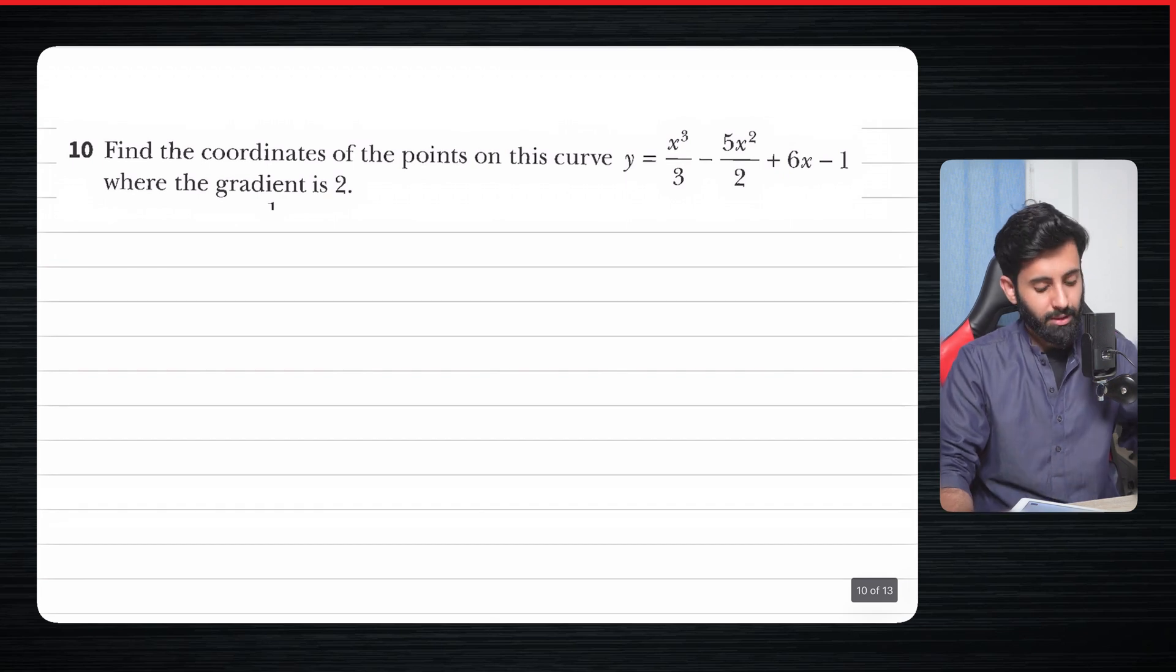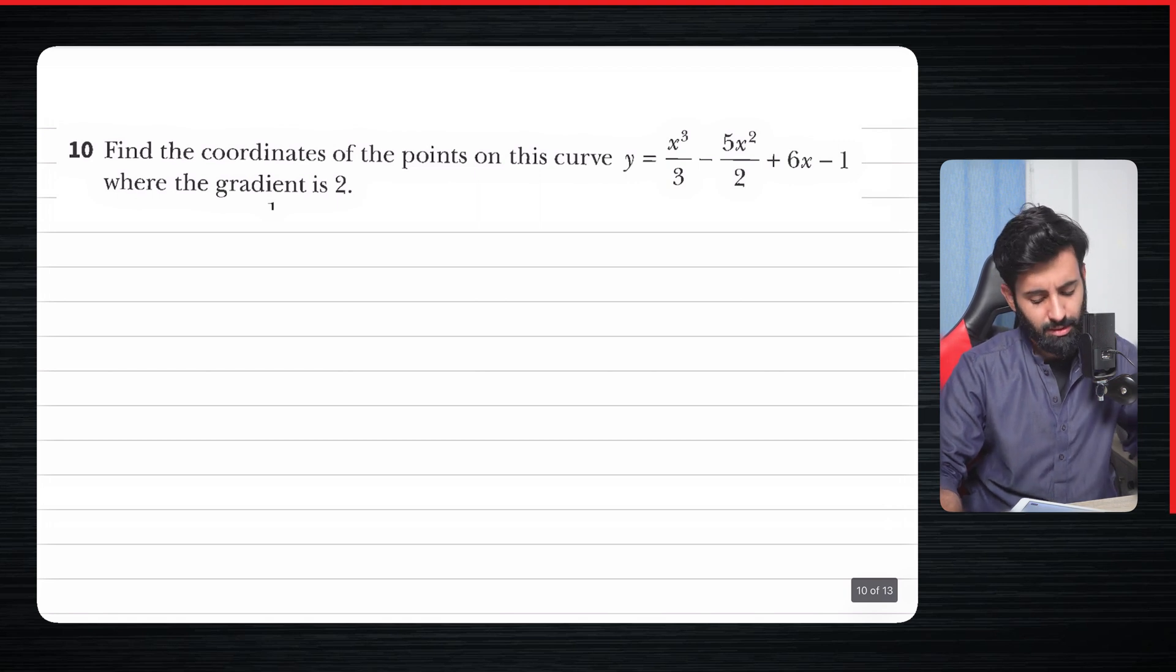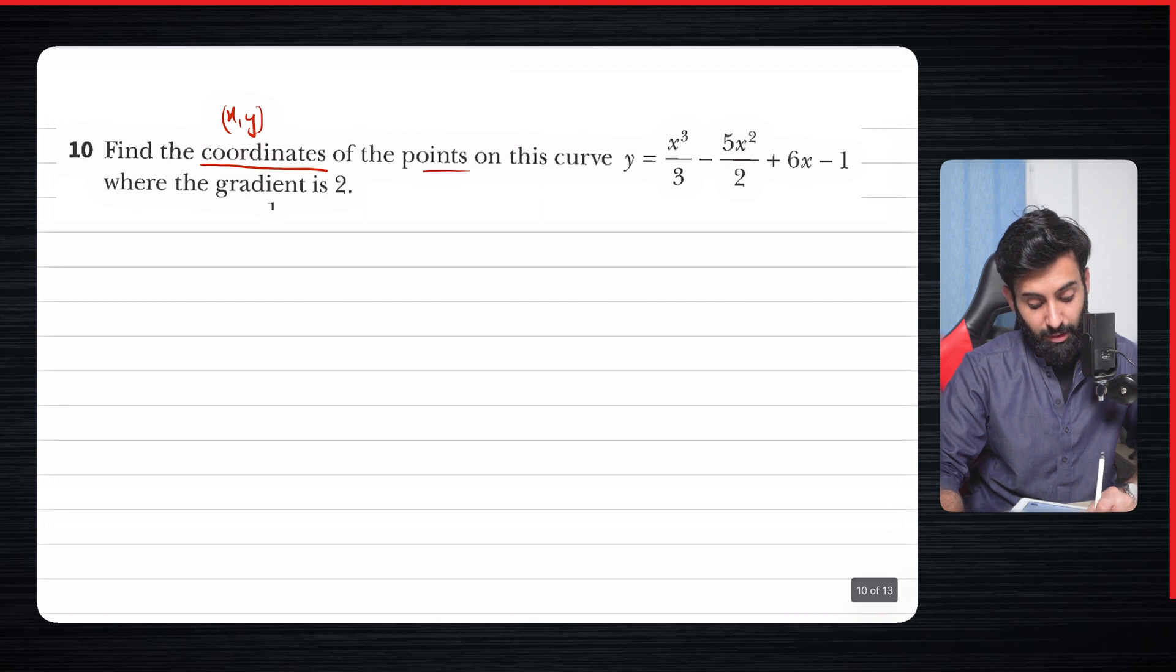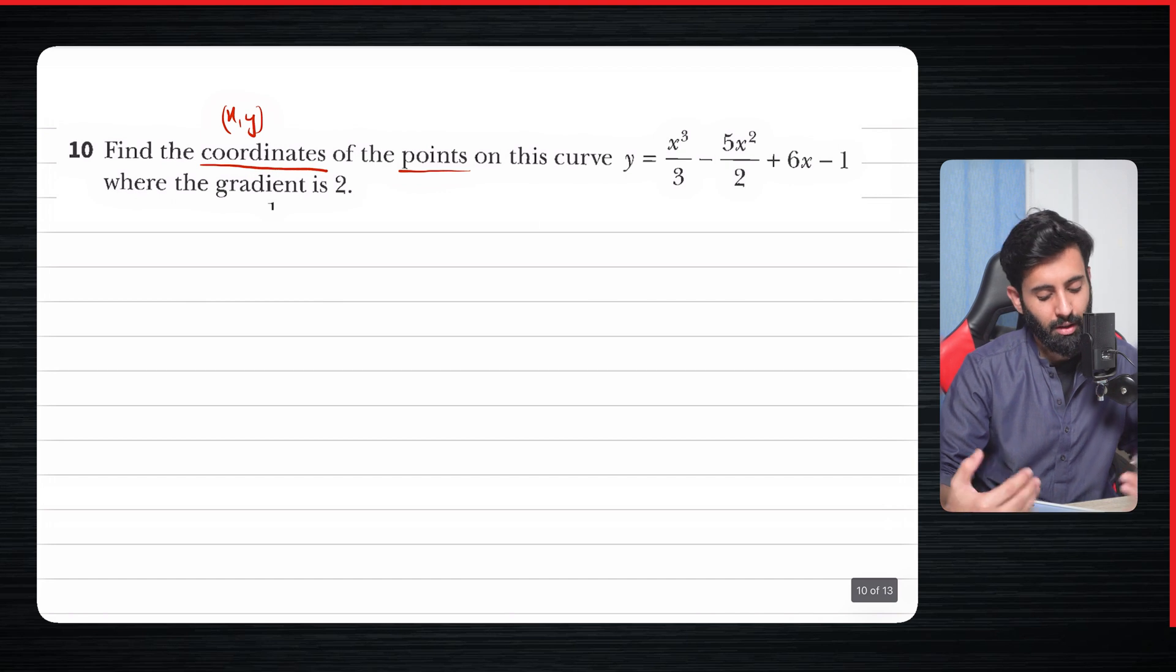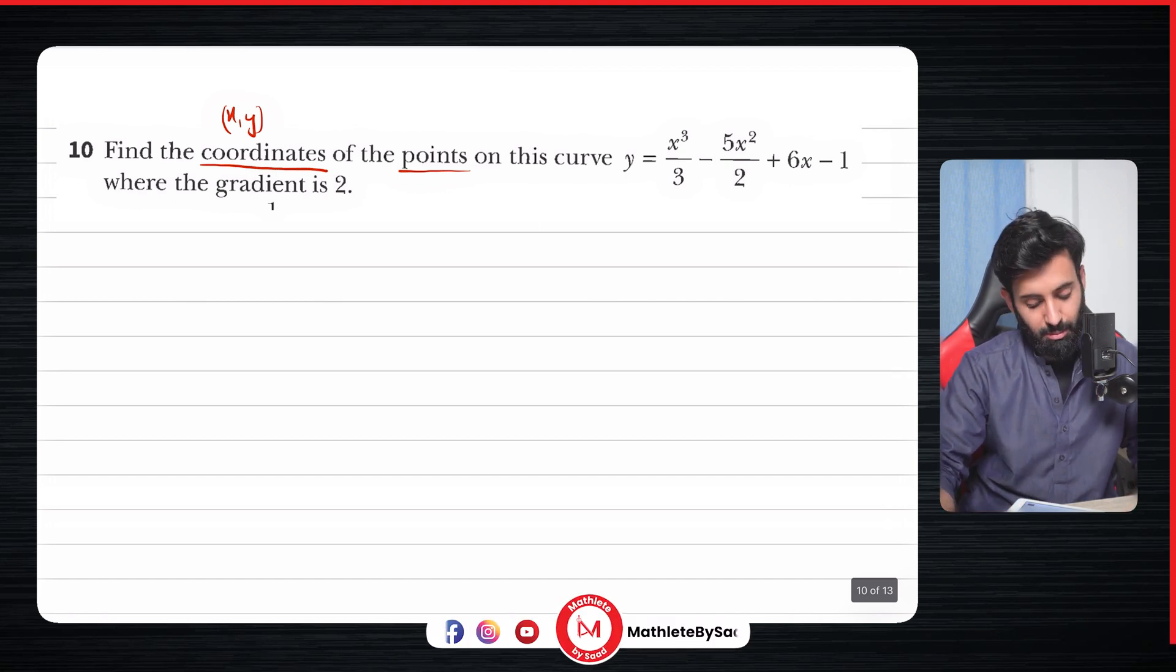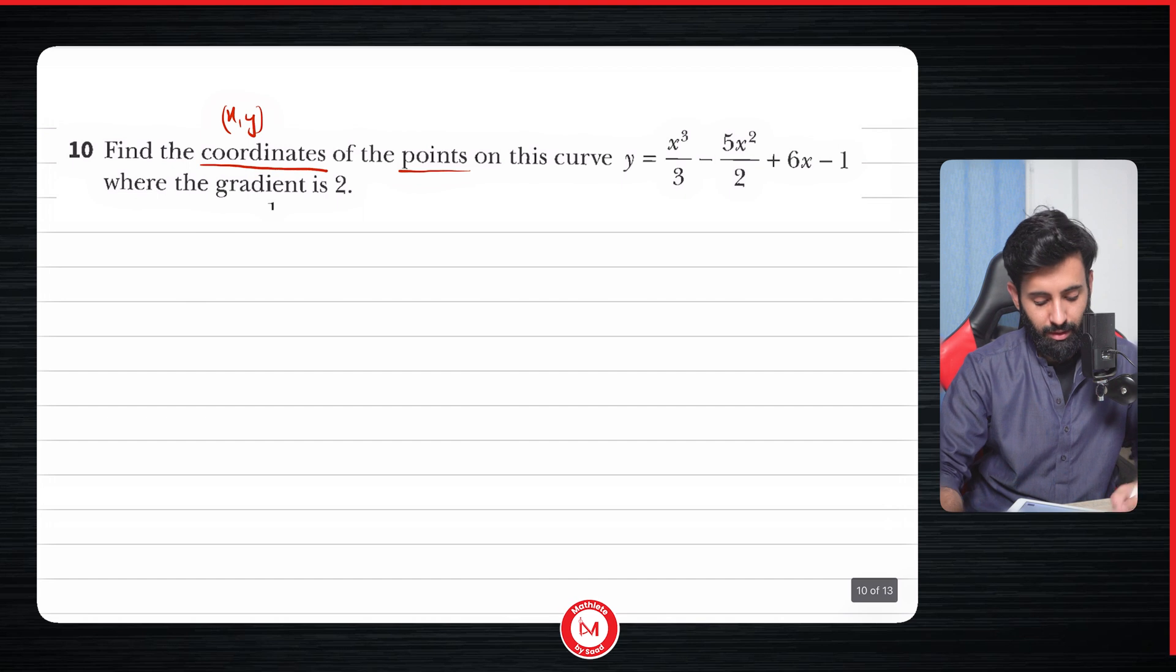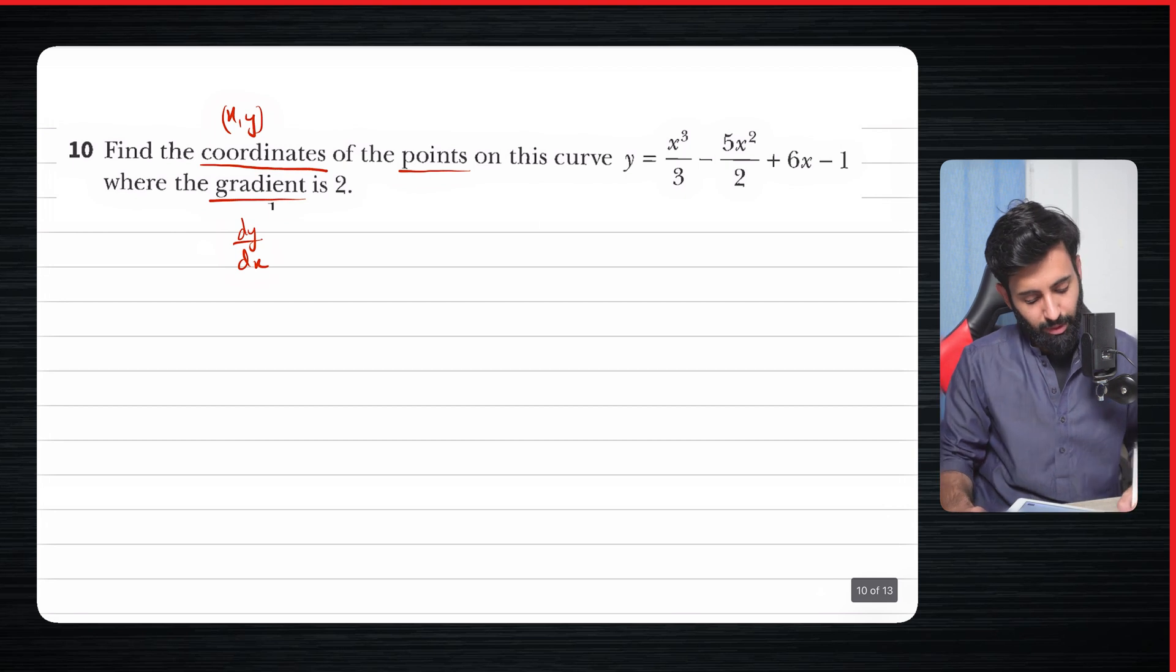Now let's do another question. This is question number 10, which I think is quite a lengthy question, not necessarily complex, but it's lengthy. So it says here, find the coordinates of the points on this curve where gradient is 2. A couple of things to observe over here. The question is asking you to find the coordinates, that means x and y. And not only that, it's asking you to find the coordinates of the points. What does that mean? That means there's going to be more than one, could be two, could be three, let's find out. And special thing about these points is that this is where the gradient is 2. So gradient, in this case, basically means dy/dx.